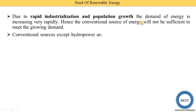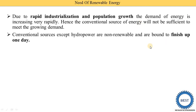The second point: conventional sources, except hydropower plants, are non-renewable and are bound to finish up one day. Conventional sources means fossil fuels. Hydropower and nuclear energy are considered conventional sources, but only hydropower is renewable.